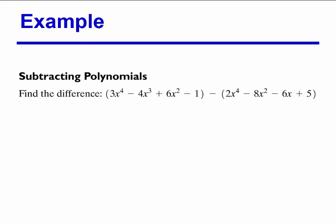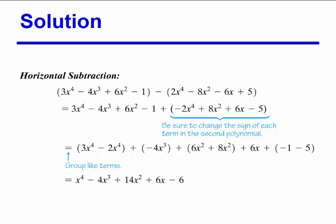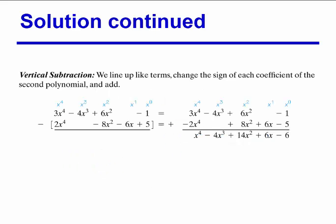For subtracting polynomials, we find the difference. The key is to remember that when you have a negative in front of parentheses and you remove the parentheses, all the signs change. So we have 3x to the fourth minus 4x cubed plus 6x squared minus 1, and that becomes minus 2x to the fourth plus 8x squared plus 6x minus 5. Then we combine like terms, and the final answer is x to the fourth minus 4x to the third plus 14x squared plus 6x minus 6. You can also do vertical subtraction.